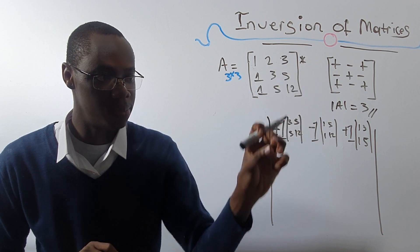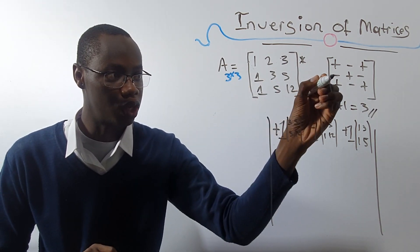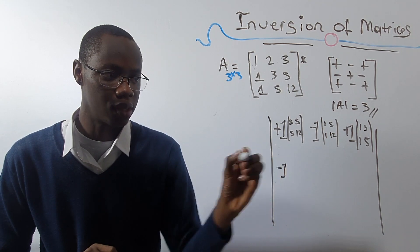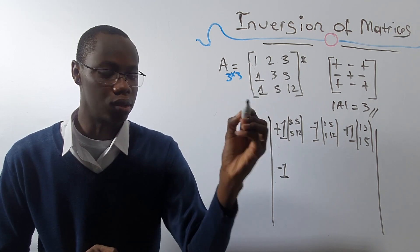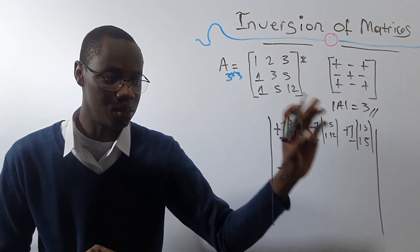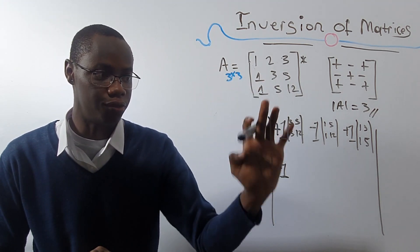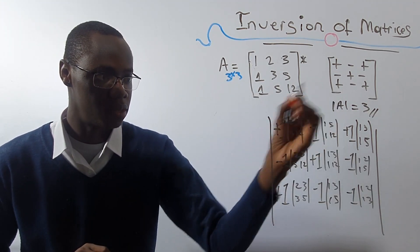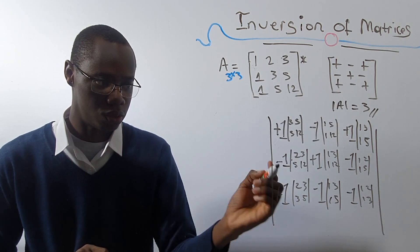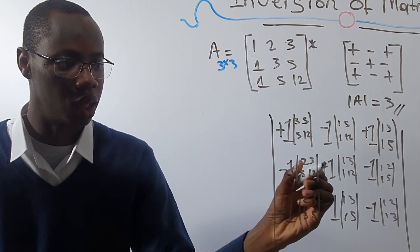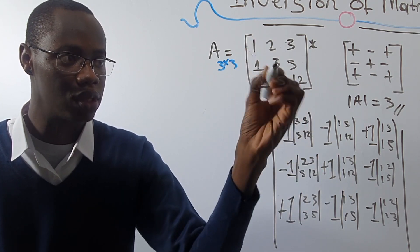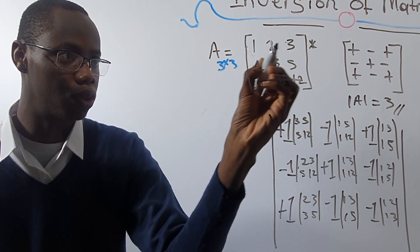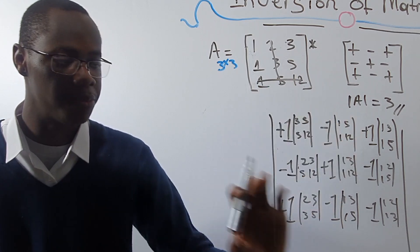The next one: all you need to do is get the minor, and this one is minus 1. Delete the row and the column — the same thing: 4, 3. The same procedure for everything. You can see the sign is repeating: plus, minus, plus. This one now is minus 1 as well. Delete the row and column, and what's left is 1, 3, 1, 5.